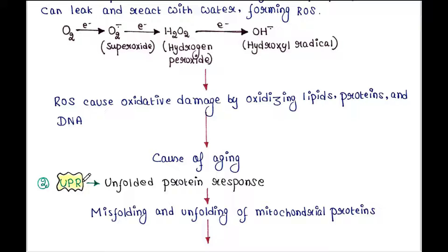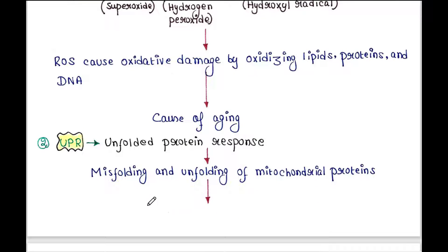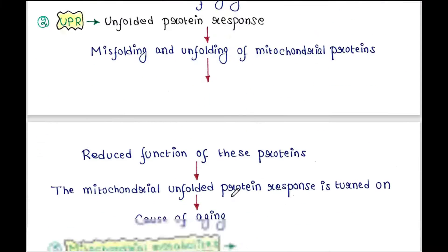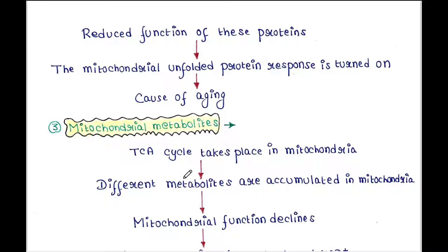Next is UPR. The full form of UPR is unfolded protein response. There are some mitochondrial proteins which are misfolded or unfolded, and this reduces the function of those proteins. At that time, the mitochondrial unfolded protein response or UPR is turned on, and it is another reason of aging.